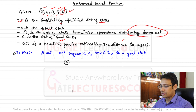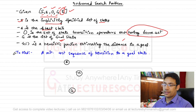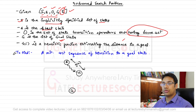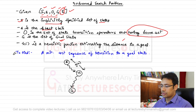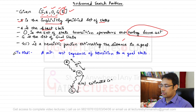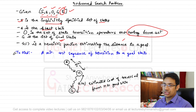Consider a start state s, a goal state g, and an intermediate node n. From s to n, the cost is represented by g(n) — the cost of the path from s to reach n. From n to the goal state, there is an estimated cost represented by h(n), which is the estimated cost of traversal from n to the goal state.